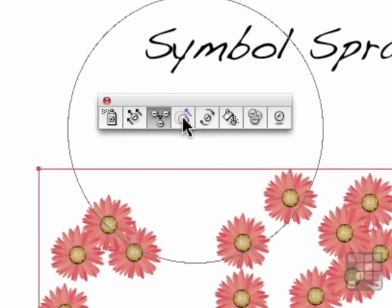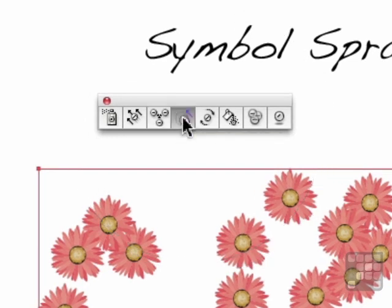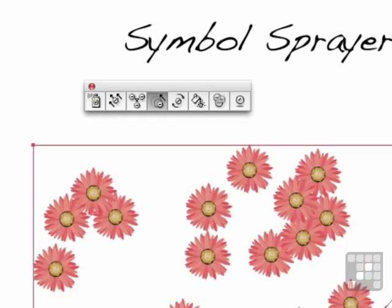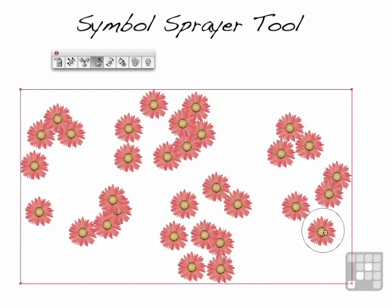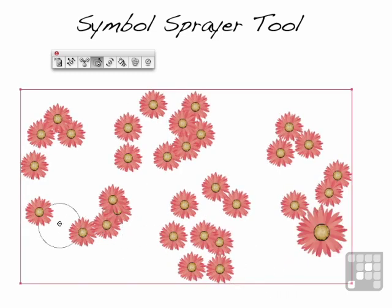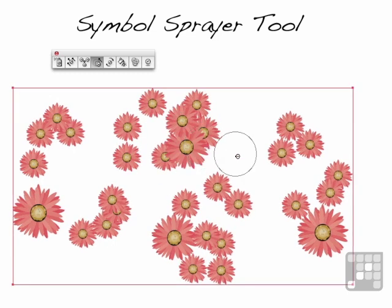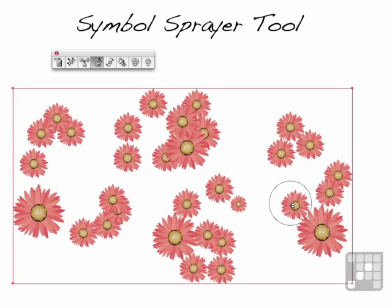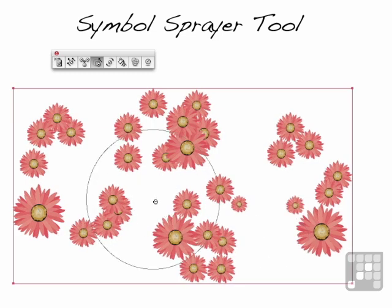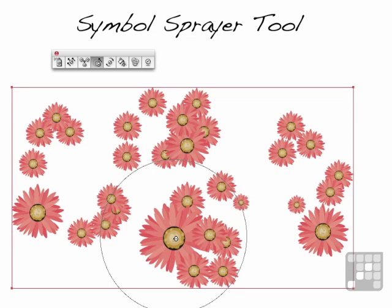The next one over is called the Symbol Sizer, and it does probably what you expect — change the size. You want to get very precise? Use a smaller brush. Since these are vector, no matter how big we make them, it's not going to hurt them a bit. You want to make them smaller? Hold the Alt key down — Alt key makes them get smaller. The one in the middle grows larger faster than the ones on the sides; it's like a magnifying glass. This tool works more intensely in the middle.